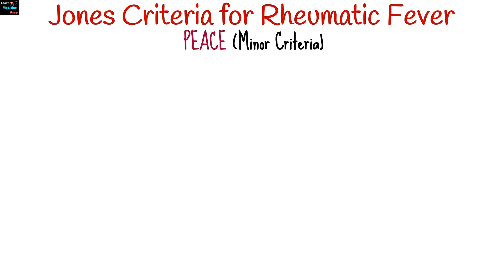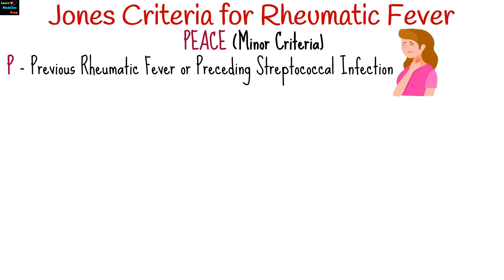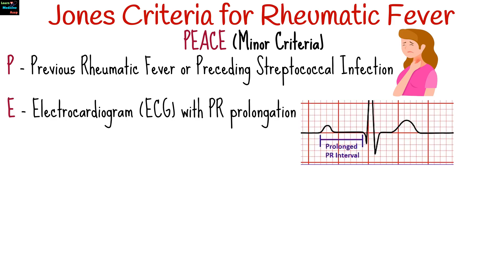For minor criteria, the mnemonic is PEACE. P is for previous rheumatic fever or preceding streptococcal infection, to support the diagnosis. E is for electrocardiogram with PR prolongation, indicating delayed conduction through the AV node.